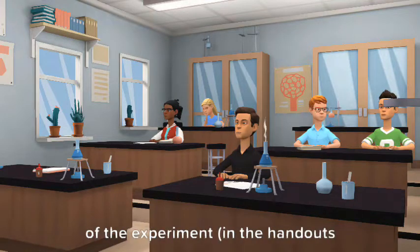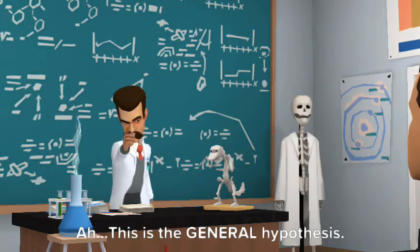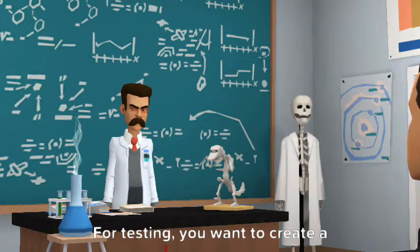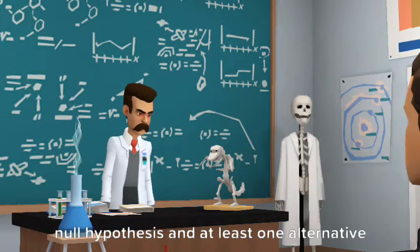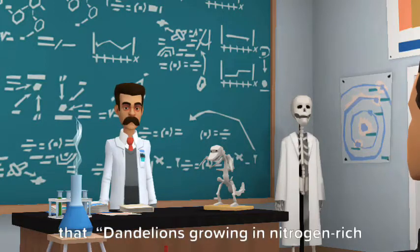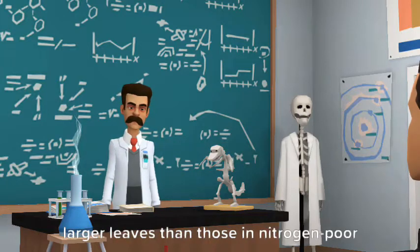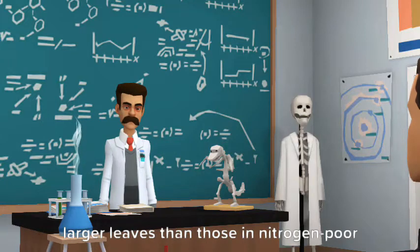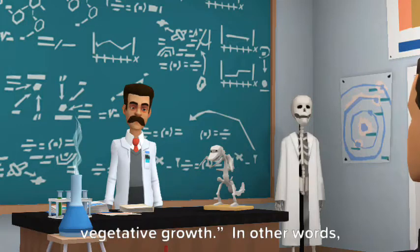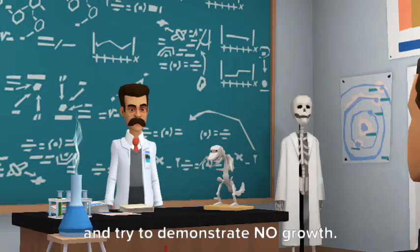And T for time, the length of the experiment. In the handout's case, two weeks. Ah, this is the general hypothesis. For testing, you want to create a null hypothesis and at least one alternative hypothesis. In the dandelion case, your H0 is the dandelions growing in nitrogen rich soils for two weeks do not develop larger leaves than those in nitrogen poor soils because nitrogen stimulates vegetative growth. In other words, you nullify your E, your expectation, and try to demonstrate no growth.